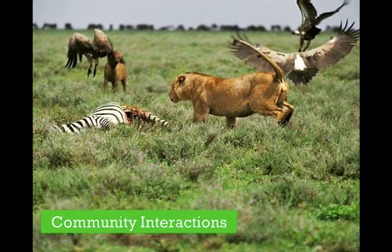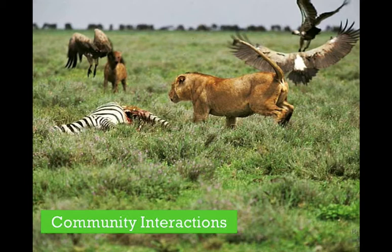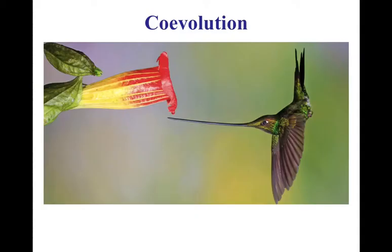In community interactions there is a concept called co-evolution. By definition, co-evolution means two interacting species act as agents of natural selection on each other. As one species changes or evolves, the other has to adjust and evolve in response. We see co-evolution in a wide variety of community relationships.